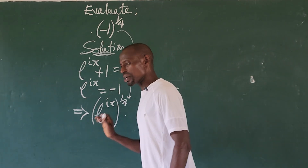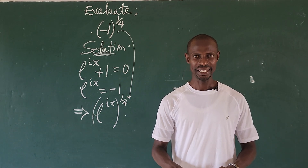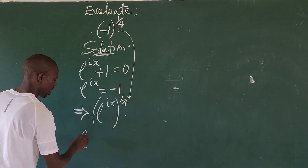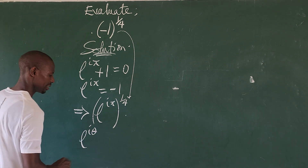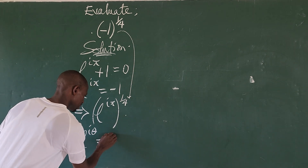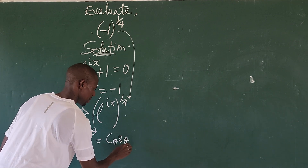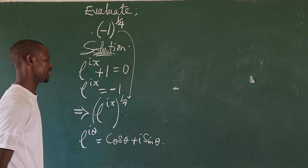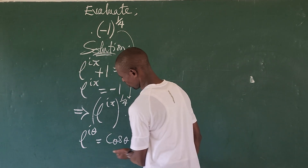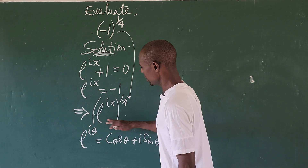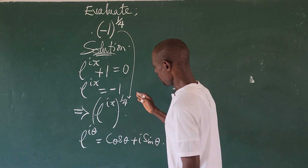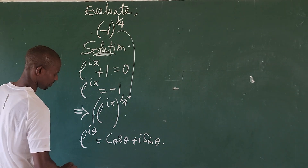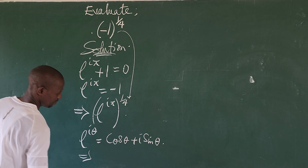What we do next is remember Euler's equation. Euler's equation states that e to the power of iθ equals cosine θ plus i sine θ. Since this expression equals that, according to Euler, we can rewrite our expression here — all we need to do is shift the exponent inside.